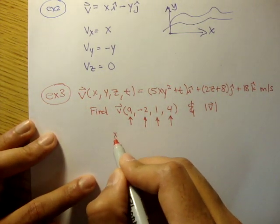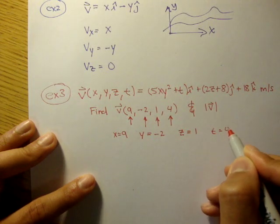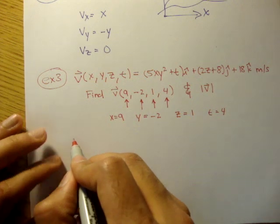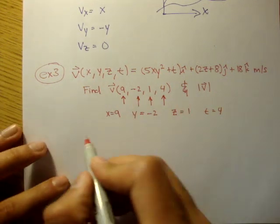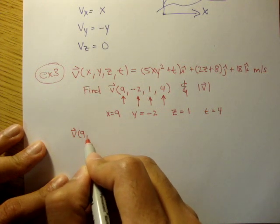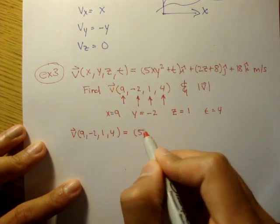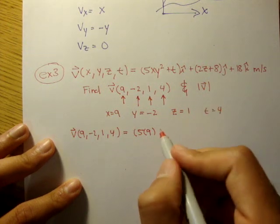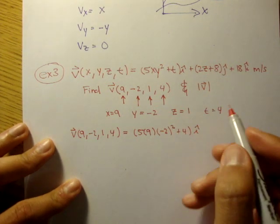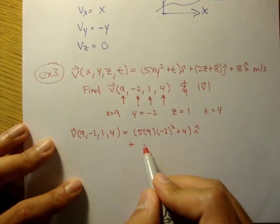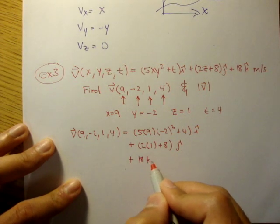So, let's just write that down. x is equal to 9, y is equal to negative 2, z is equal to 1, and the time is equal to 4. Now, this is actually a really simple problem. We just literally plug all these in, and that gives us our velocity field. So, our velocity at 9, negative 2, 1, and 4 is equal to 5 times 9 times negative 2 squared plus 4 in the i, plus 2 times 1 plus 8 in the j, and plus 18k.